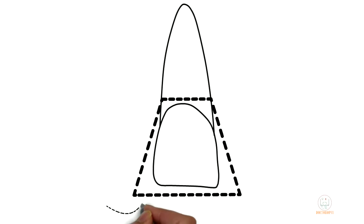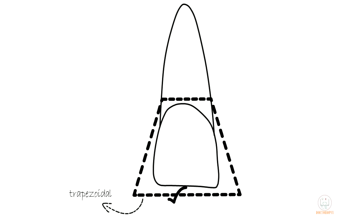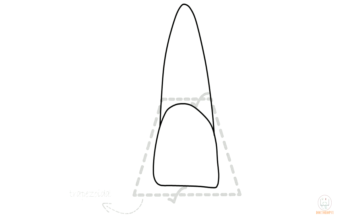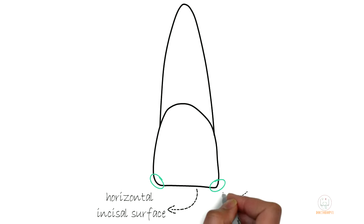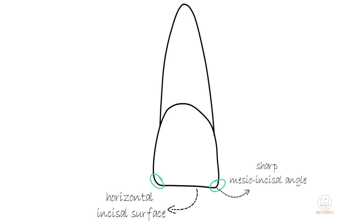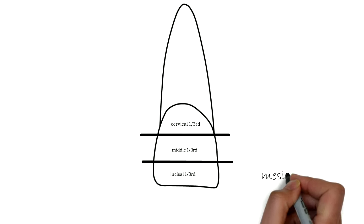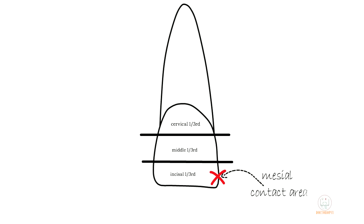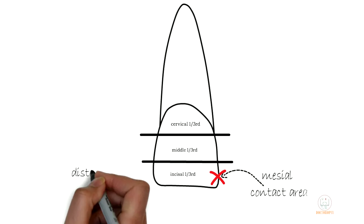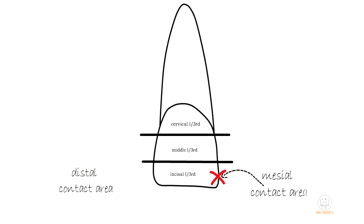The outline form of the crown is trapezoidal, with the longer of the two parallel sides towards the incisal ridge and the shorter side towards the cervix. The maxillary central incisor has a horizontal incisal surface which ends at two angles: the sharp mesial incisal angle and the rounded disto-incisal angle. The mesial contact area, by which the maxillary central incisor makes contact with the other maxillary central incisor, is at the incisal third.